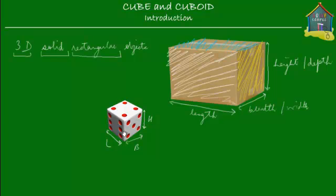So a three-dimensional solid rectangular object with six faces, made of six rectangles. In the same way, this cube also has six faces — like a die, which has six faces on which the six numbers are written. So both the cube and the cuboid have six faces, and they each have a length, a breadth, and a height. So if they are both the same, then what is the difference? Why is this called a cube and why is this called a cuboid?